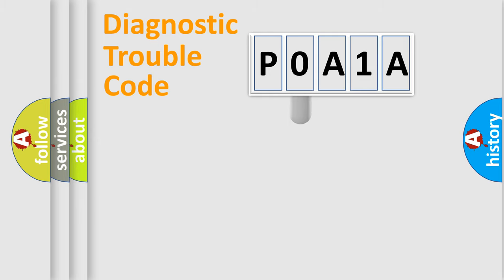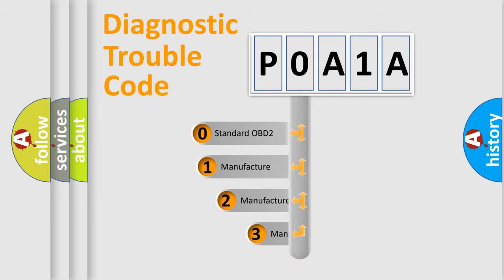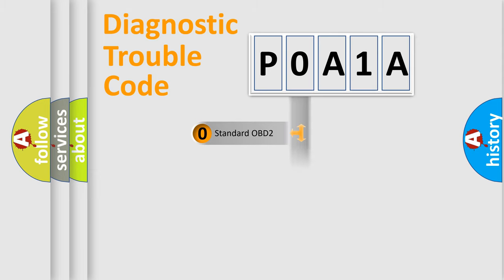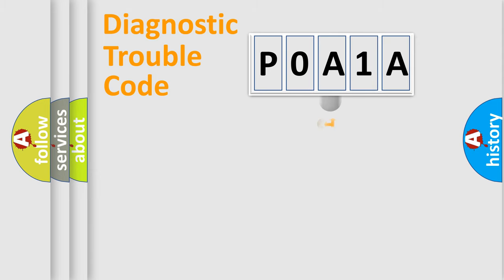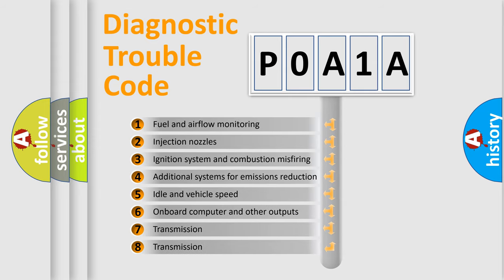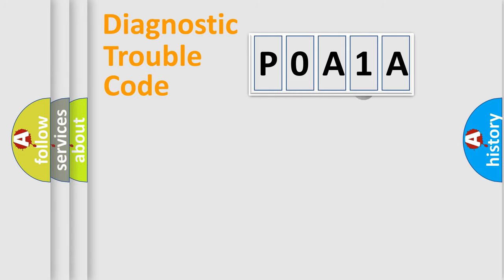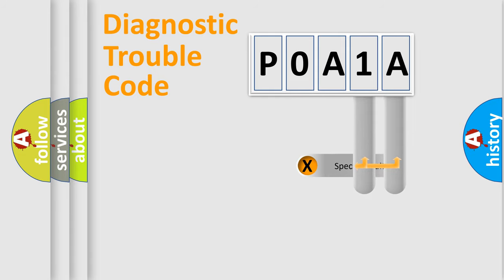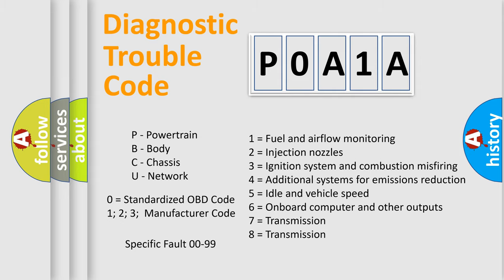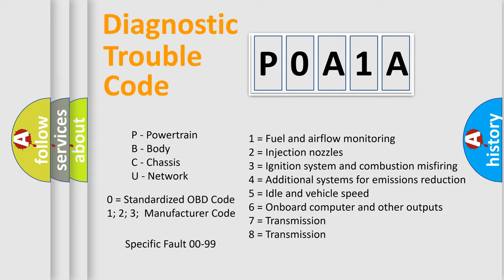This distribution is defined in the first character of the code. If the second character is zero, it is a standardized error. In the case of numbers 1, 2, or 3, it is a manufacturer-specific error. The third character specifies a subset of errors, and this distribution is valid only for the standardized DTC code. Only the last two characters define the specific fault of the group.